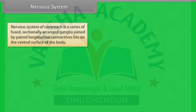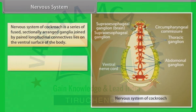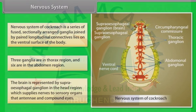Nervous system: The nervous system of cockroach is a series of fused, segmentally arranged ganglia joined by paired longitudinal connectives on the ventral surface of the body. Three ganglia are in the thorax region and six are in the abdomen region. The brain is represented by the supra-oesophageal ganglion in the head region, which supplies nerves to sensory organs — the antennae and compound eyes.